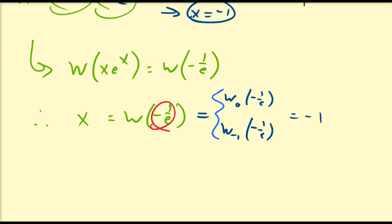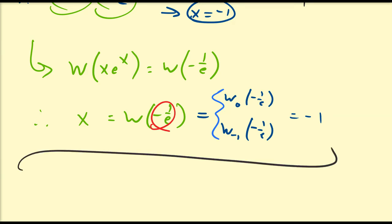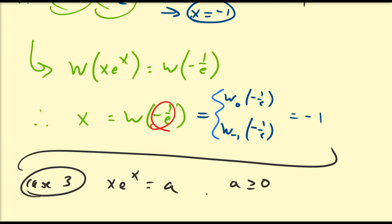This is the algebraic justification for the branch-point case. Since we're dealing with multi-function inverse images, there's a bit more complexity: we can have zero, one, or two solutions depending on the value of a, so we need to investigate each case carefully. Case 3: consider x·e^x = a where a ≥ 0.